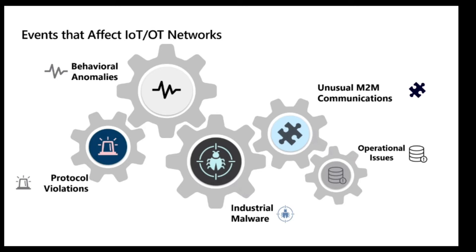How can we classify the different types of events that may impact an IoT network and require immediate attention? Events such as behavioral anomalies — where a system has been running the same commands for years and suddenly there is a change — unusual machine-to-machine communications which might indicate a problem in one of our controllers. Operational issues with devices that go offline suddenly, as well as monitoring for malware and industrial malware specifically. And sometimes protocol violations between different equipment from different providers that might even cause a controller to crash if something unexpected is received.